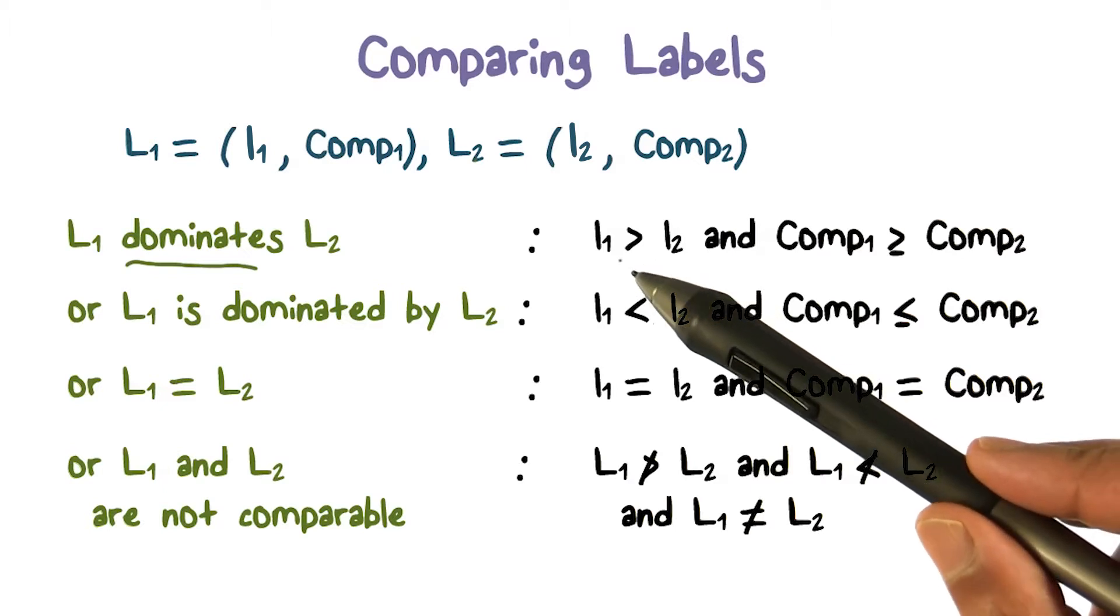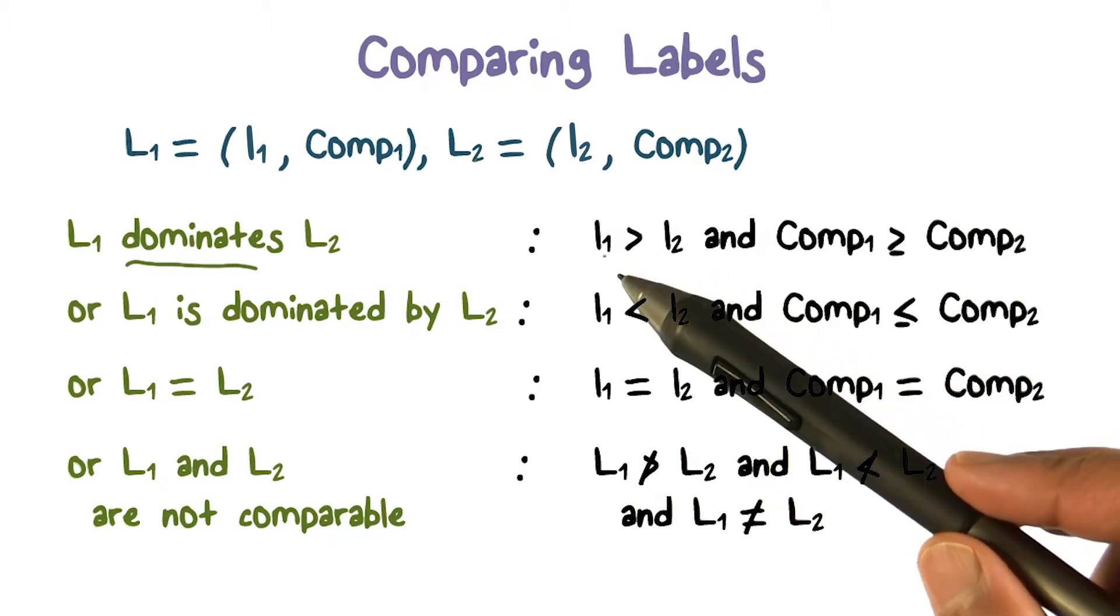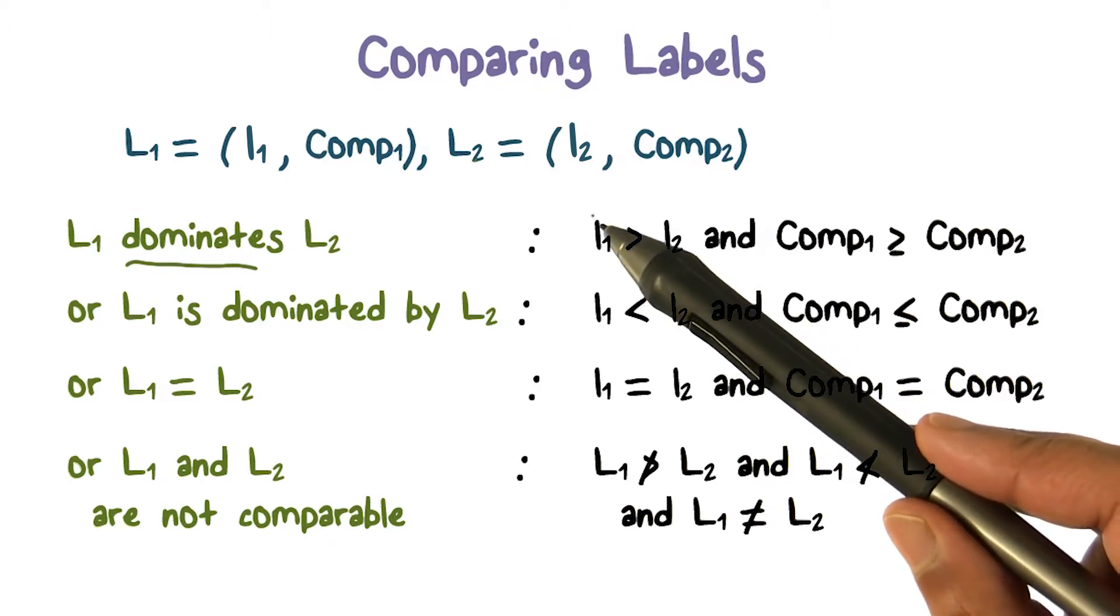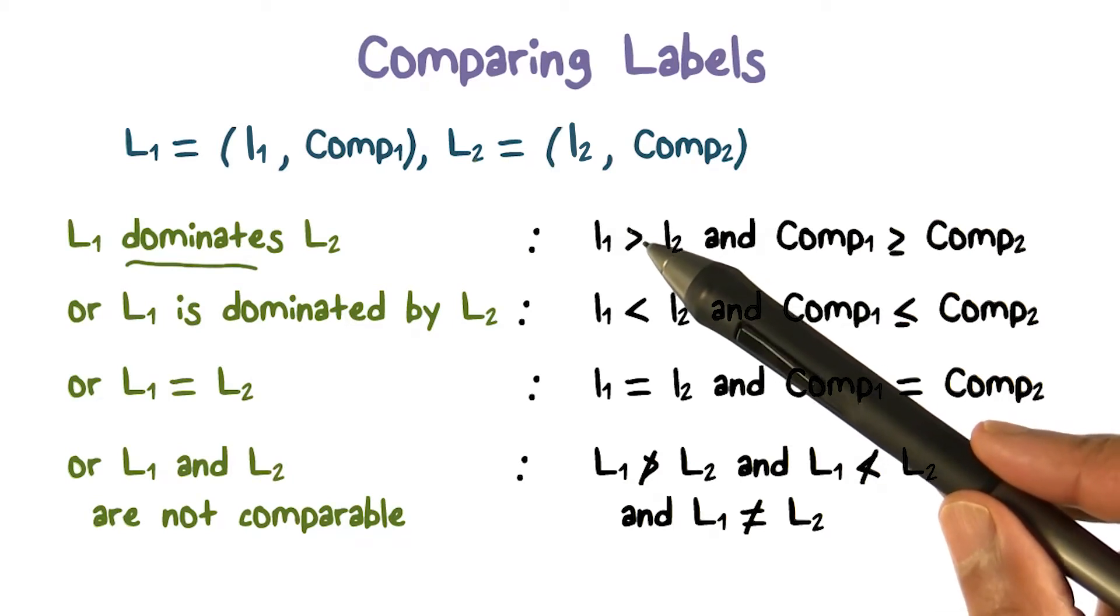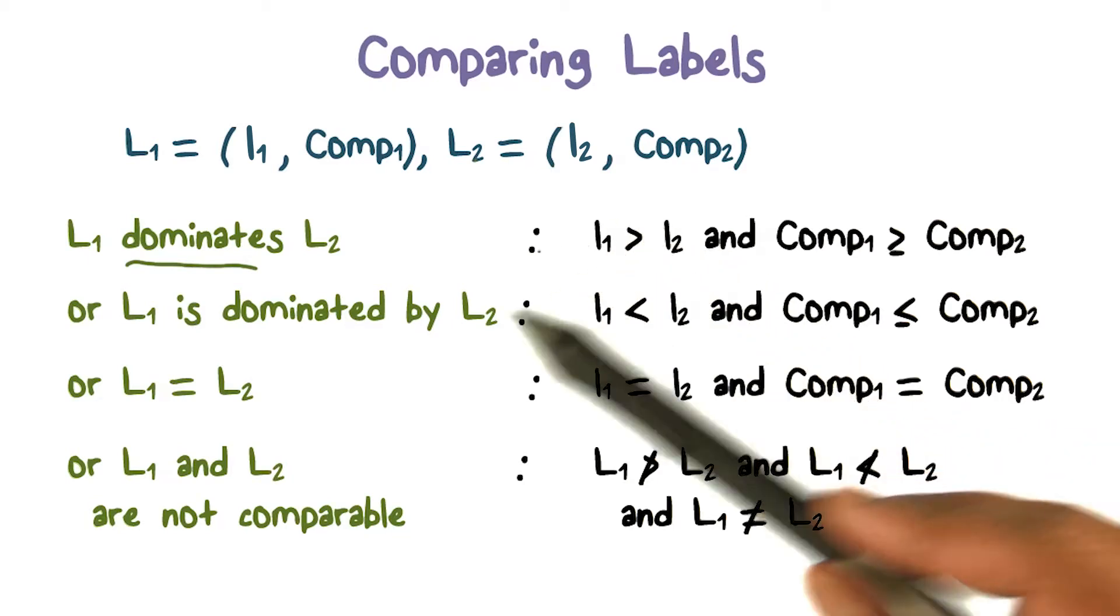So the comparison is going to yield what we call what label dominates the other label. So L1 can dominate L2, or L1 can be dominated by L2. Or maybe neither one dominates the other one. So these are the various possibilities.